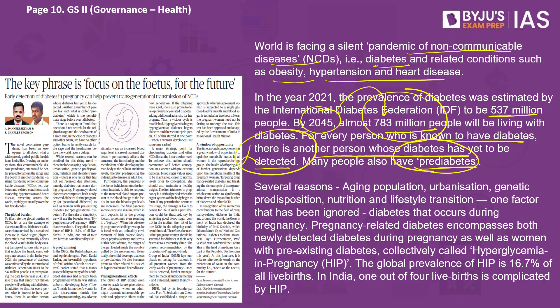There are many reasons why diabetes is increasing not just in India but across the world: aging population; urbanization — in a rural economy, people do much more physical labor in daily life compared to urban areas, where you are more dependent on machines.